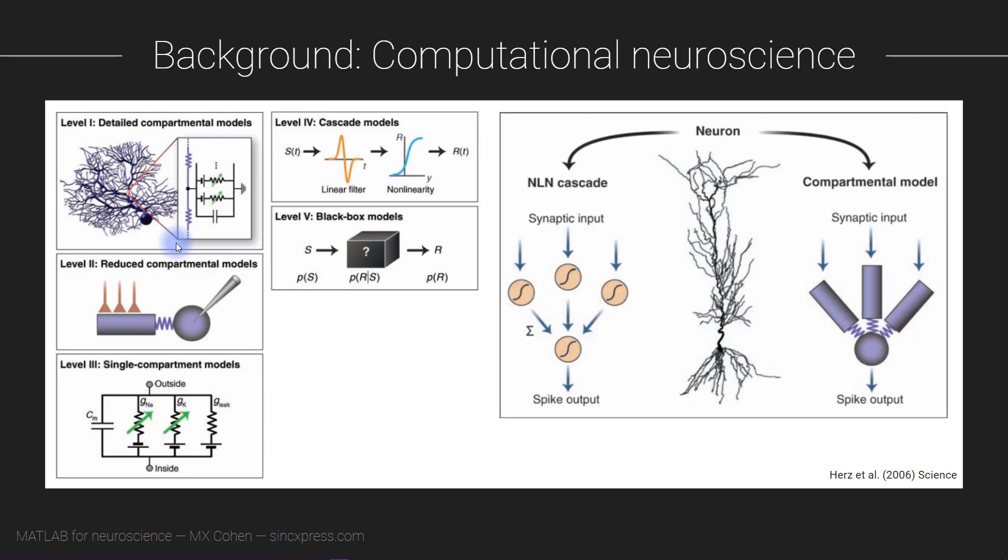And then we move up to increasing levels of abstraction. Here we have what's called a single compartment model. These are models that still retain some biophysical plausibility, but they don't have any morphology. So this whole circuit is representing one entire brain cell.